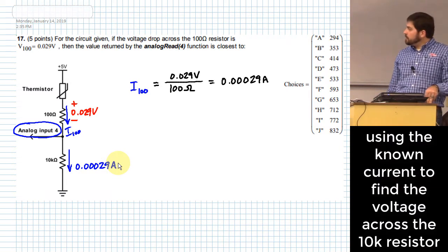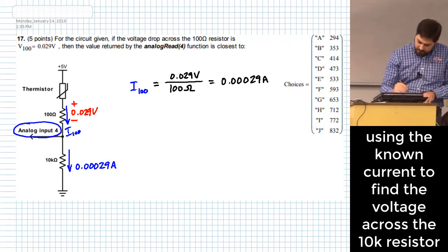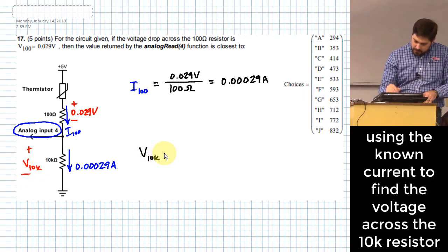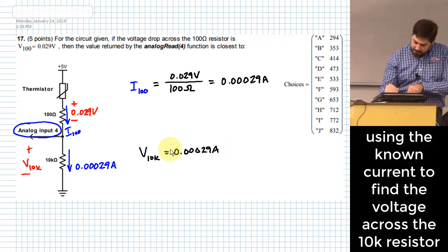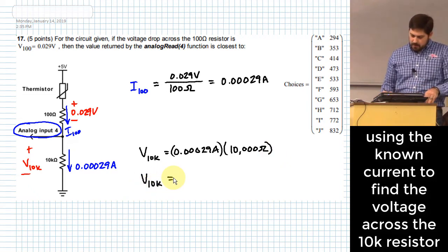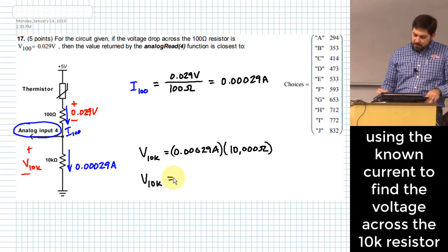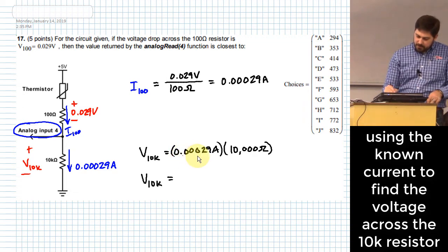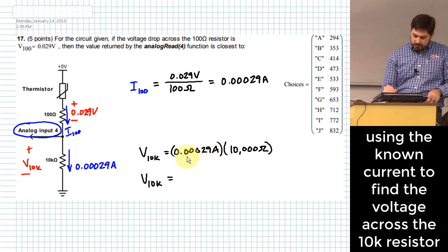If that's the current going through that resistor, what's the voltage across that resistor? That voltage across that resistor is just going to be equal to 0.00029 amps times 10 kiloohms. So that's 10,000 ohms. So we can actually move it the other way now if we would like. 10,000 ohms times 0.00029 amps. How many places should we move it? One, two, three, four.